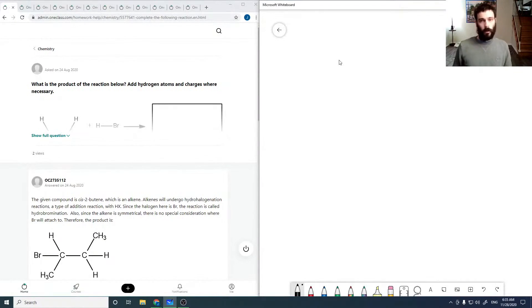Okay, so what is the product of the reaction below? In this case you can't see the reaction, but I'm just going to draw it out. So we've got CH3-C=C-CH3 plus HBr.